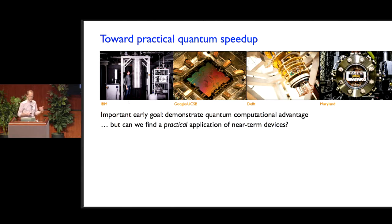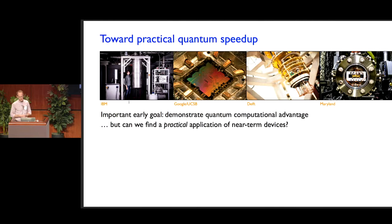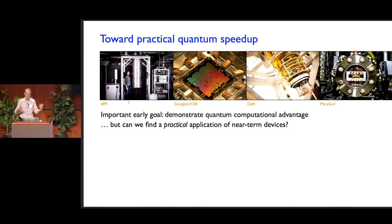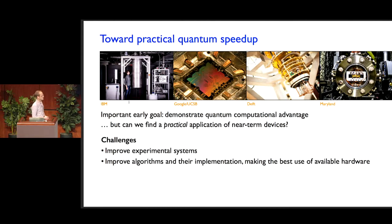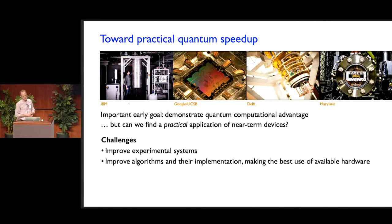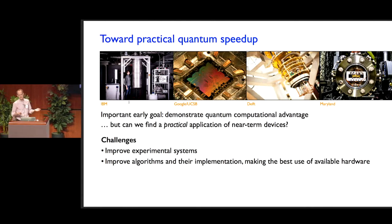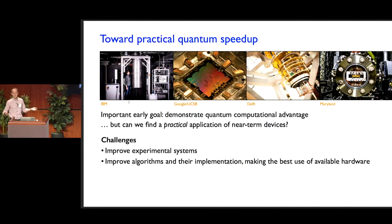What can we do that would actually solve some problem of maybe scientific or industrial interest, beyond just a demonstration of quantum superiority? In trying to do this, there are some major challenges. Obviously, to get to this point, we're going to have to have significant improvements in our experimental systems. This is a very hard problem that a lot of people are working hard on. But I don't think it's fair for us as theorists to just say go off to the lab and come back when you have a million-qubit quantum computer with gates done to a part in 10 to the 7.